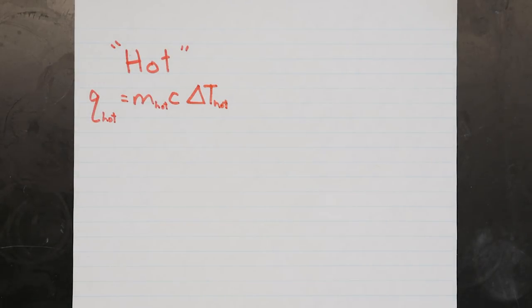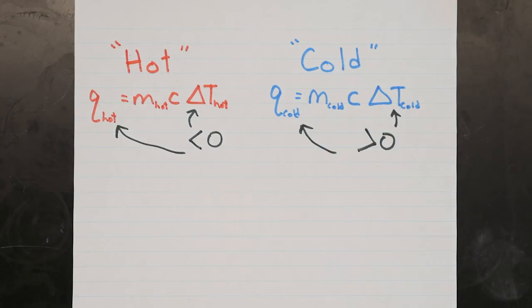We know that the heat change for the hot water is mc delta t, and the heat change for the cold water is also mc delta t. Since the hot water cools down, delta t will be negative, and so will q. Likewise, delta t and therefore q for the cold water will be positive since it gains energy.